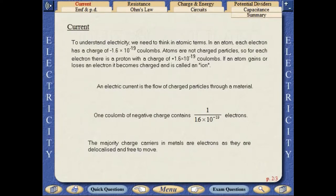To understand electricity, we need to think in atomic terms. In an atom, each electron has a charge of minus 1.6 times 10 to the minus 19 coulombs.